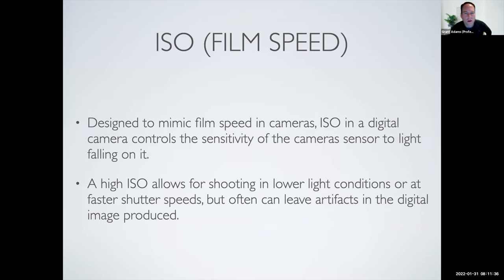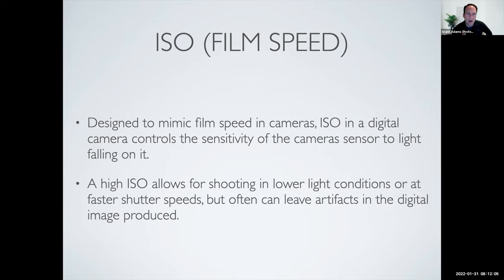ISO, also known as film speed, is a holdback to the world of old film. The easiest way to describe it: you used to go to a drugstore and buy film, and you had to pick what ISO rating your film was. Essentially, it's how sensitive that material is to light. If you bought ISO 100, it wasn't that sensitive. If you bought ISO 800, it was really sensitive to light. You could vary that depending on the conditions to get better results.